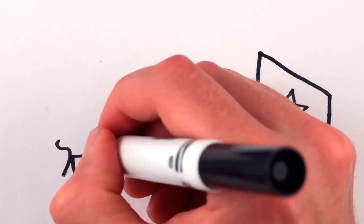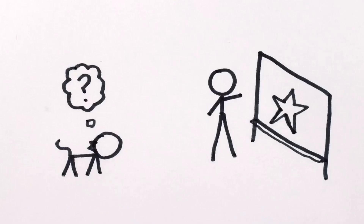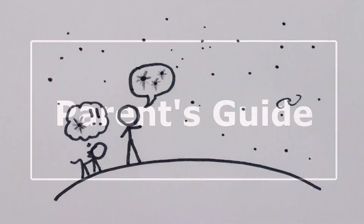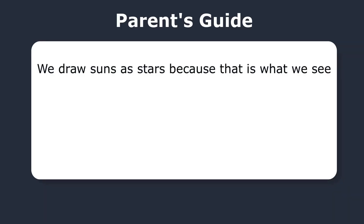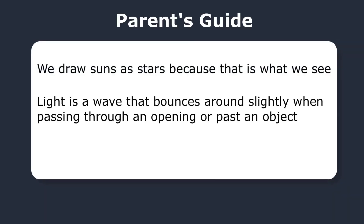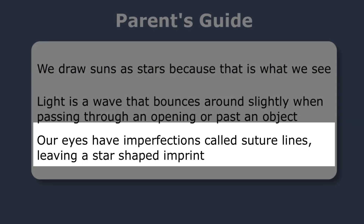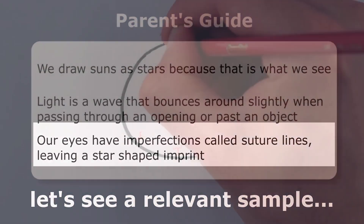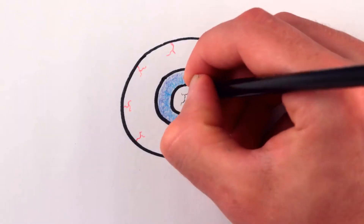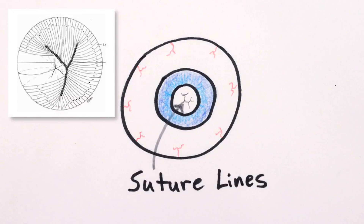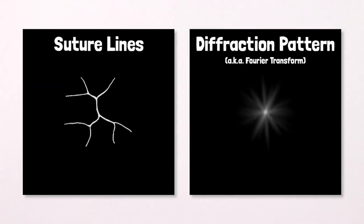So why do we draw stars that have points? The answer is surprisingly simple — we see stars as pointy. The lenses of our eyes have subtle structural imperfections called suture lines, where the fibers that make up the lens meet. These imperfections leave a very particular imprint on light as it passes.